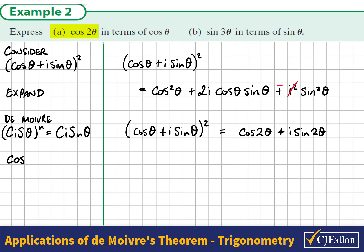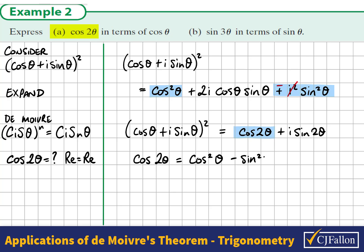We want an expression for cos2θ, and we have a cos2θ in the De Moivre's expansion. We see that cos2θ must be equal to the real parts in the first expansion, because the real parts must equal the real parts in a complex equation.